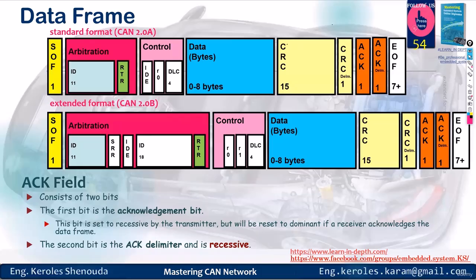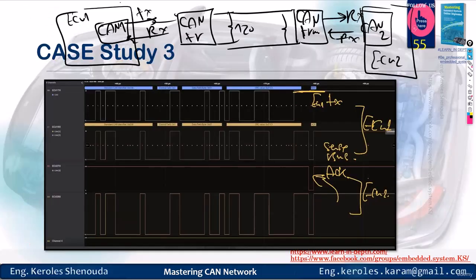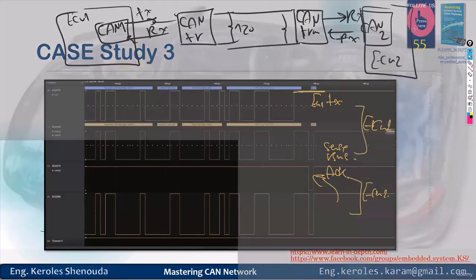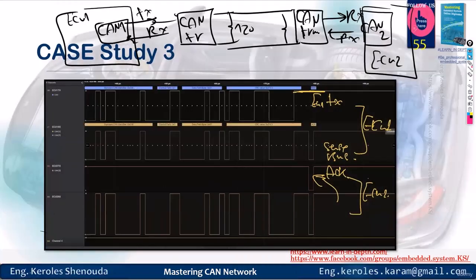After that comes the acknowledgement. As a transmitter in this acknowledgement state, I keep it idle at one. When ECU2 responds with an acknowledgement, it will send a zero. So, the bus will output a zero. It's not just about what I send. When I send something, I also check on my RX in the CAN controller to see if what I received is correct or not. Upon checking, I'll find that the RX received a zero, which means it's acknowledged.